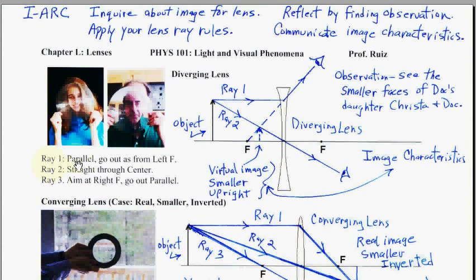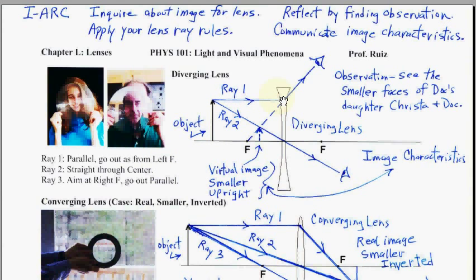Ray 1 is parallel to the axis. We have an optic axis through the center of the optical element, like we did with mirrors. We have two F points, which are the focal points. Ray 1 is parallel, and it goes out as if coming from the left F. Here's how you can remember that rule: if the ray is parallel to the axis, we think F — always, whether it's lenses or mirrors.